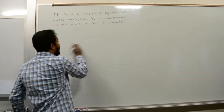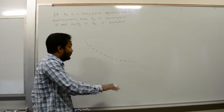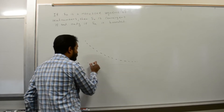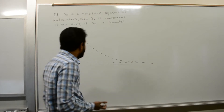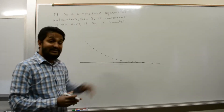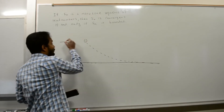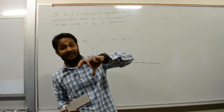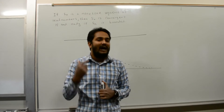For a monotonically decreasing sequence that is convergent, the limit of the sequence bounds it from below — the limit sits at the bottom. Since it's decreasing, the very first term is the largest, so the sequence is bounded above by that first term. So a monotonically decreasing convergent sequence is also bounded overall.